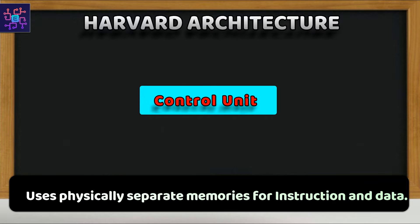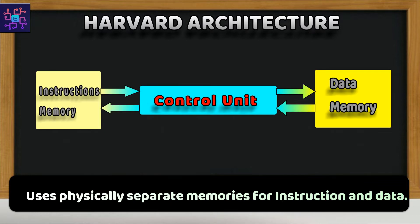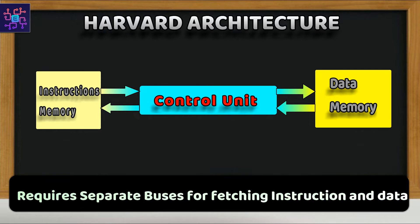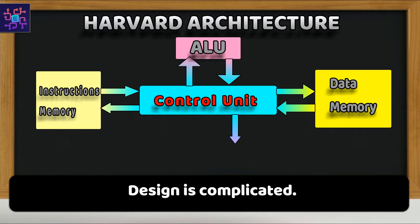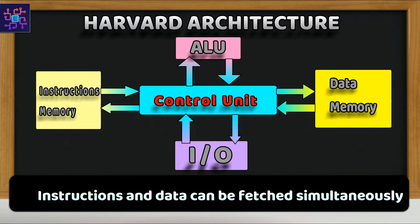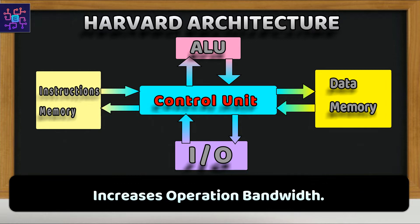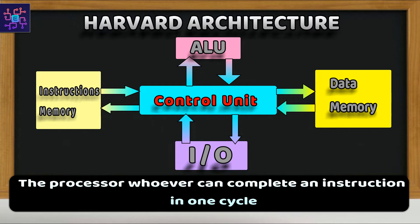So moving towards the Harvard architecture. The Harvard architecture uses physically separate memories for their instructions and data. It requires separate and dedicated buses for memories for fetching the instructions and data. Its design in this case is somehow complicated. The instructions and data can be fetched simultaneously as there are separate buses for the same, which in turn increases the operation bandwidth. The processor however can complete an instruction in one cycle.